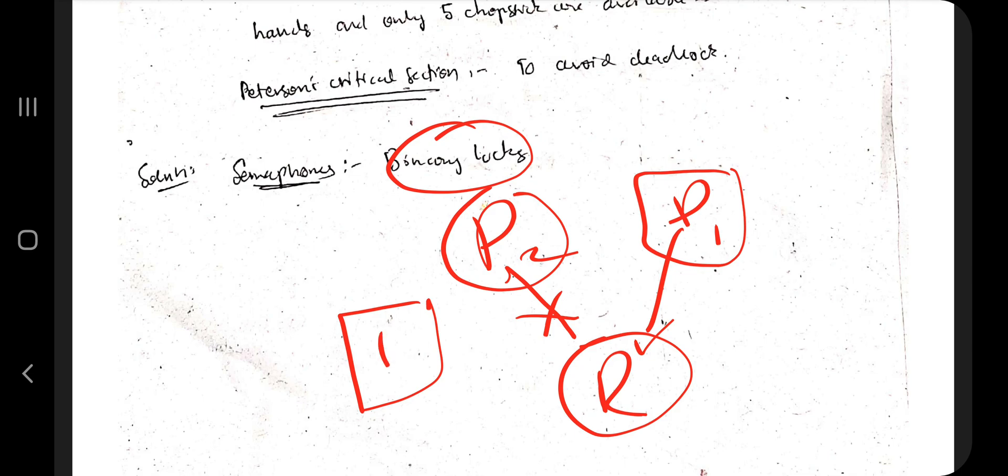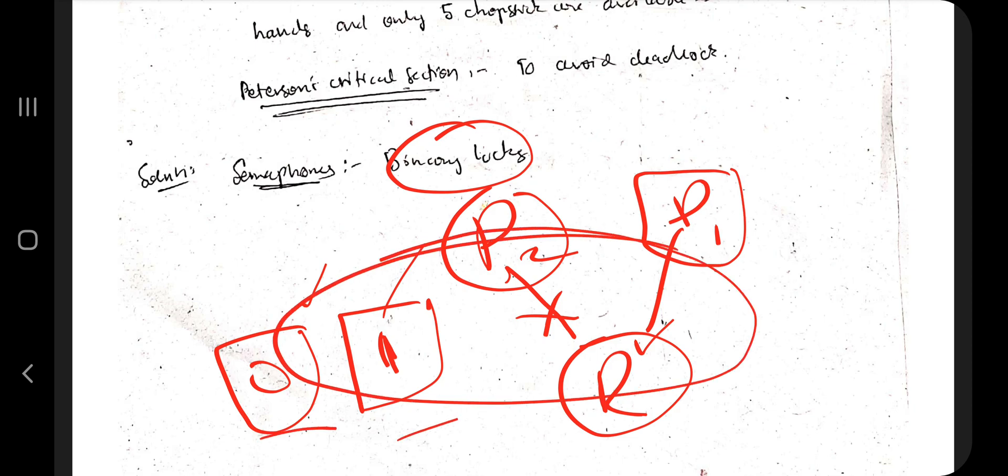Semaphores will have a lock which can be either 0 or 1. It's a data structure that will have a value inside of it which is either 0 or 1. This will help implement the semaphore binary lock and will help us avoid deadlock as well.